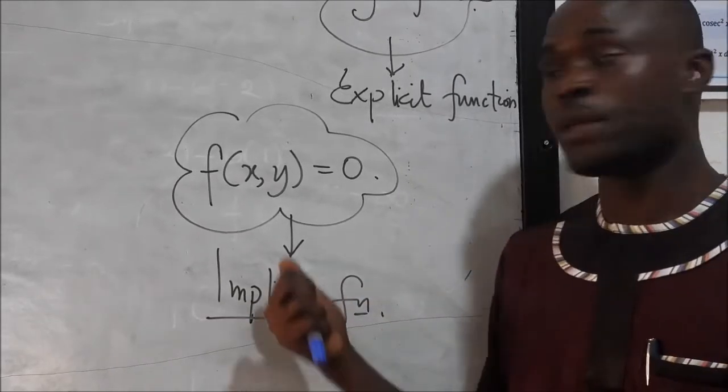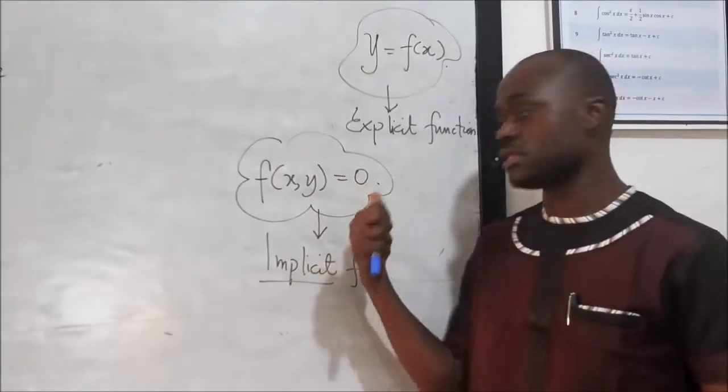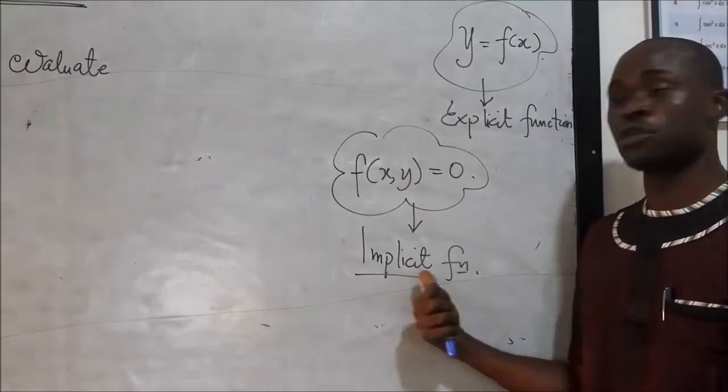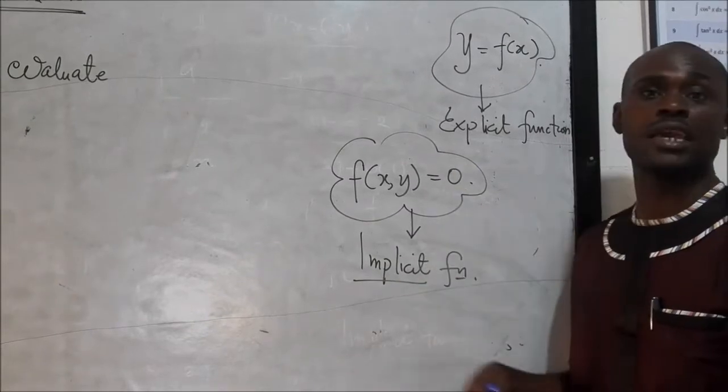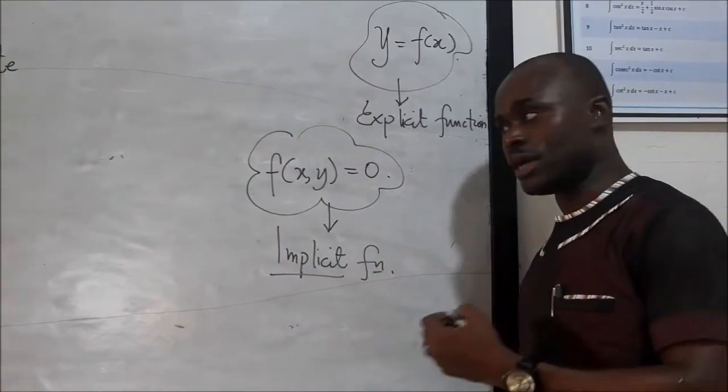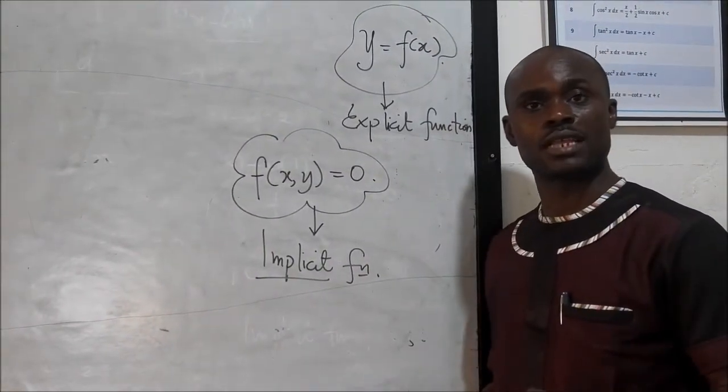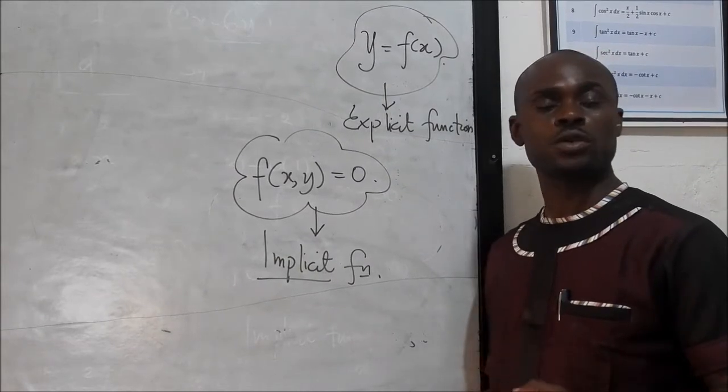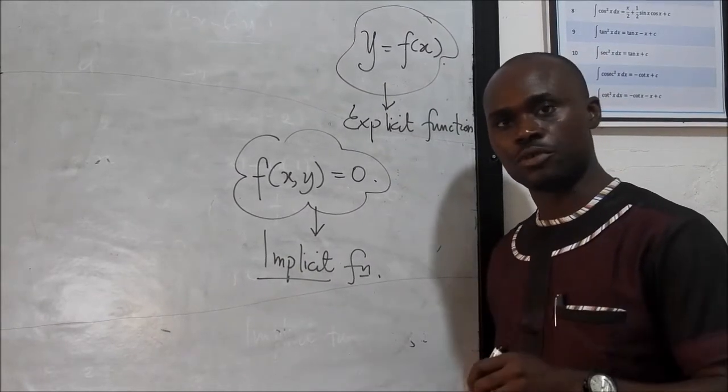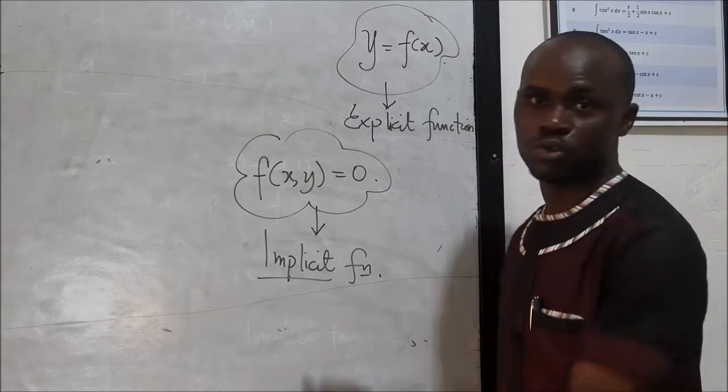Now the truth is that it may not always be two variables. This is just implicit function in two variables, x and y, just two variables. You can have x, y, z and all that. So those will now start giving what we call the functions of several variables. I'm going to do a video on that.